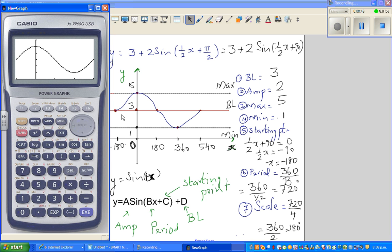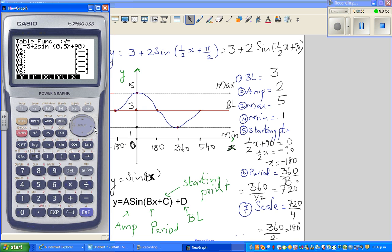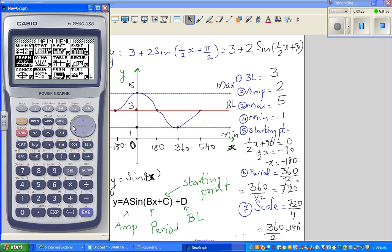If you want to see this on your table menu, go to your table menu and check your values. I want to go from minus 180 to 540, with a step of 180. Can you see? At minus 180, it is 3. At 0, it is 5. At 180, it is 3 again. At 360, it is 1. And at 540, it is 3. This is how you can check.